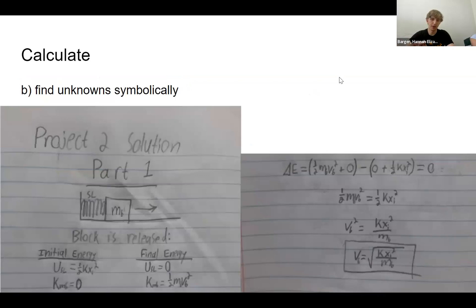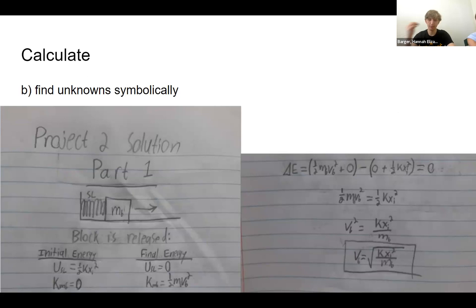We split this into three parts. First, we used energy analysis on the spring and the blue block to find the velocity of the blue block as it leaves the spring. The initial energy is all in the left spring, represented as one-half kx squared, and the kinetic energy of the block is zero. The final energy has the spring fully decompressed with zero potential energy, and the kinetic energy is one-half mv squared. Using conservation of energy, we solve for the velocity of the blue block: the square root of kx squared over the mass of the blue block.